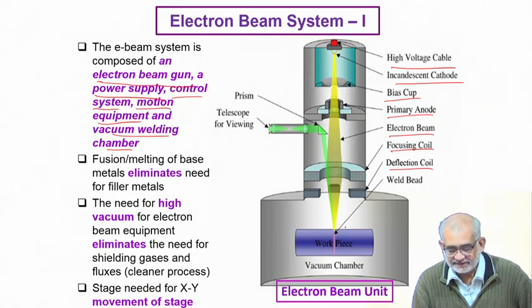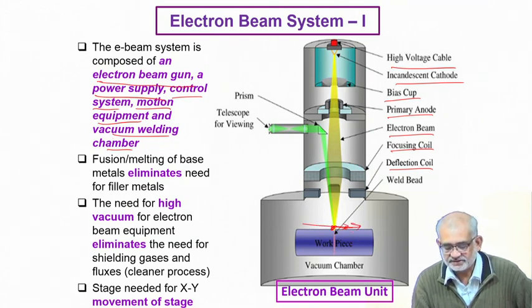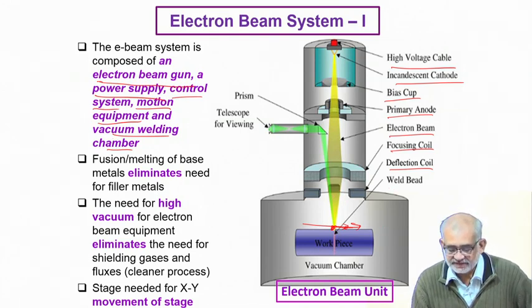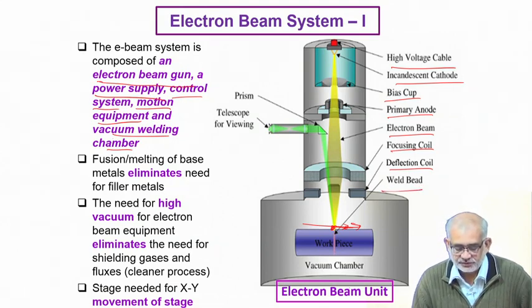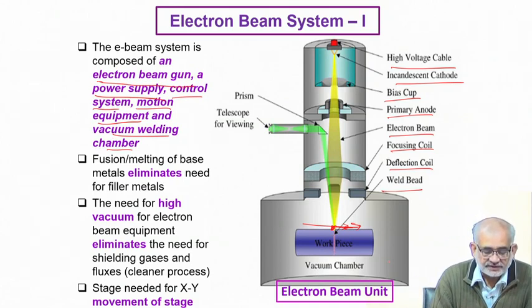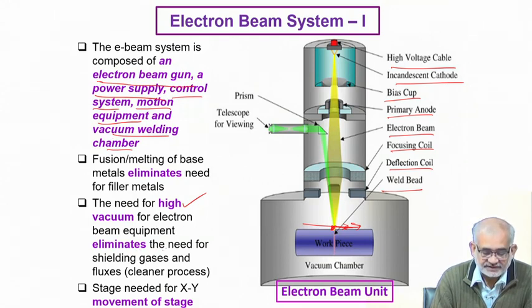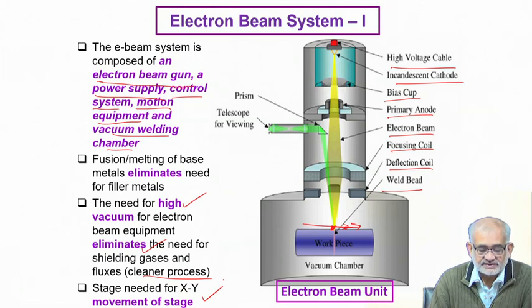We are able to irradiate exactly the desired spot. If you want to move from one spot to another, we need to move the stage along that direction. So there can be relative motion between the beam and the work piece, and this is where we get either a weld zone or a surface melted zone. The overall setup requires very high vacuum, and since there is no extraneous material present in the form of shielding gas or flux, it is a very clean process, and we need certain stage manipulation.